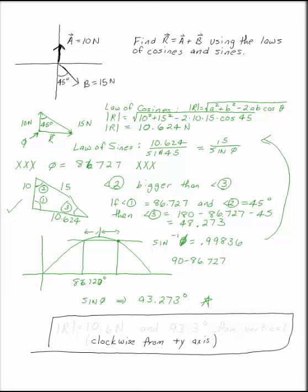This is the value that makes this triangle work out. So when you're answering the question, the magnitude of r is 10.6 newtons and the angle is 93.3 degrees from the vertical.